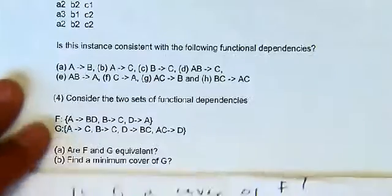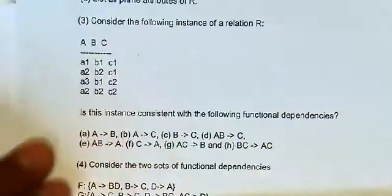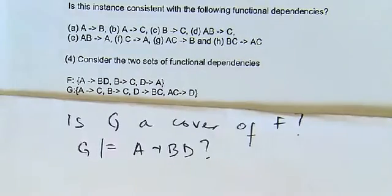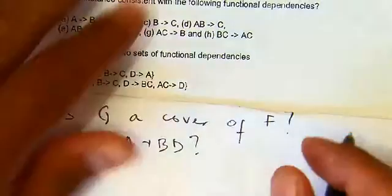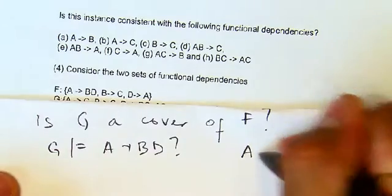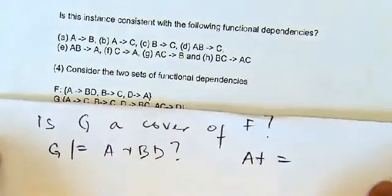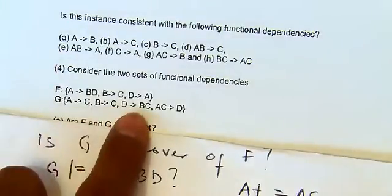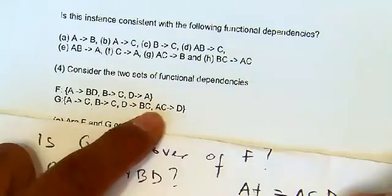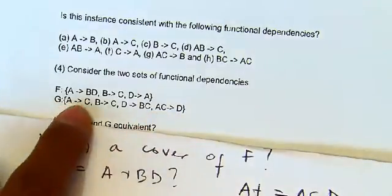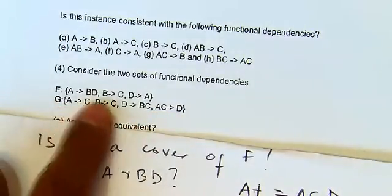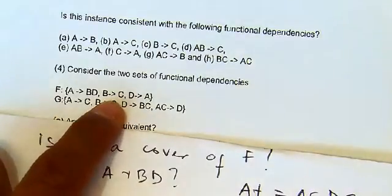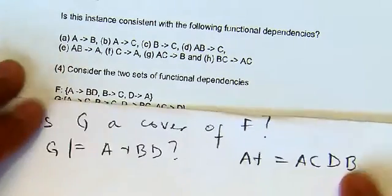We compute A+ using the elements of G. Starting with A, we get A and C. From A and C we get D. Then from D we get B, and from B we get C. So BD is a subset of A+, and the answer is yes.